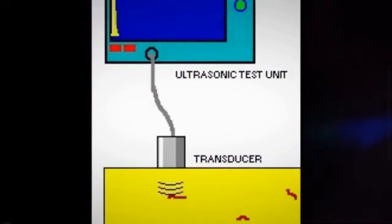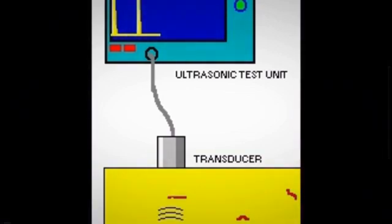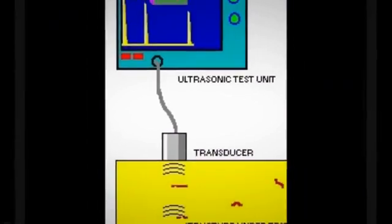When the waves encounter a boundary or defect, some of the energy is reflected back to the transducer, while the rest continues to travel through the material.